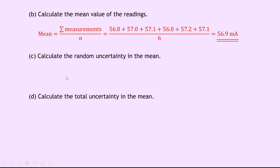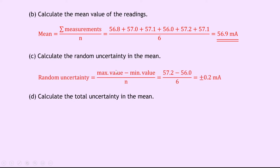Part C says to calculate the random uncertainty in the mean. To calculate the random uncertainty, we take our maximum value, subtract the minimum value and divide by our total number of measurements. So this is equal to 57.2 minus 56.0 divided by 6, and this gives an answer of plus or minus 0.2 milliamps.